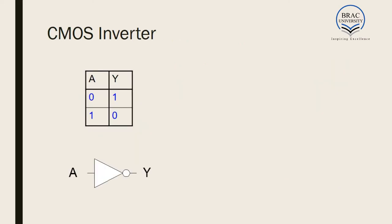Now let us look at the CMOS inverter. In a CMOS inverter, we have to make such an arrangement that if input is zero, output is one, and if input is one, output is zero. If input is zero, PMOS turns on. So if we connect the input to this PMOS and connect this to VDD, we will get output equal to one when input is zero. When input is equal to one, we will get output floating.